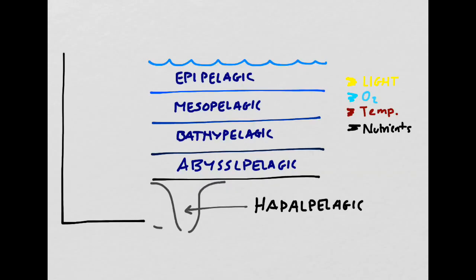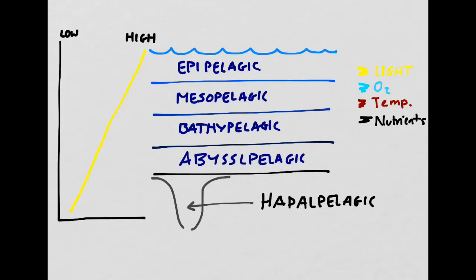Before we dive into the details of nutrient cycling and energy flow, it's helpful to think about how each of these characteristics varies across all the ocean zones. Light tends to vary in a linear fashion, with the most light being in the epipelagic zone and the least light being in the abyssopelagic or hadopelagic layers.